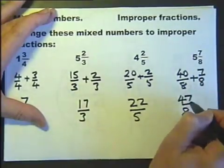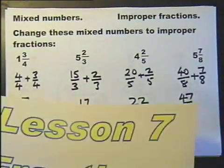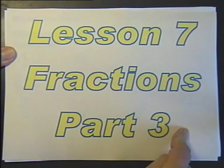Mixed number, improper fraction. Finished. So that is lesson 7, part 3. Finished.